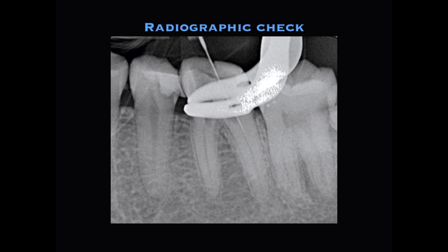I also tried to search for the buccal canals — the mesiobuccal canals — but I couldn't find them. In this x-ray there's something very important: my burr angulation is not correct. I've been tilting the burr and removing more dentin towards the perforation side. If I had not stopped at this point and taken this x-ray, I would have gone further and probably perforated, causing an iatrogenic error.